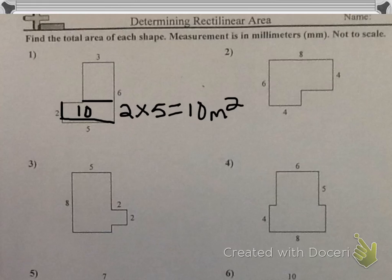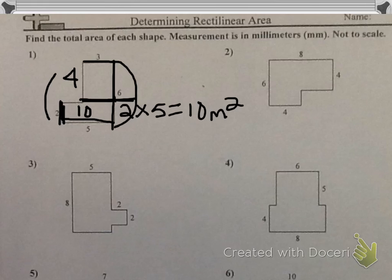The top rectangle has a width of 3, but the length is not 6, because the 6 actually represents the length of the whole side. Since we've cut the side off here, we must subtract this 2. So this length is actually 4, because 4 plus 2 equals 6.